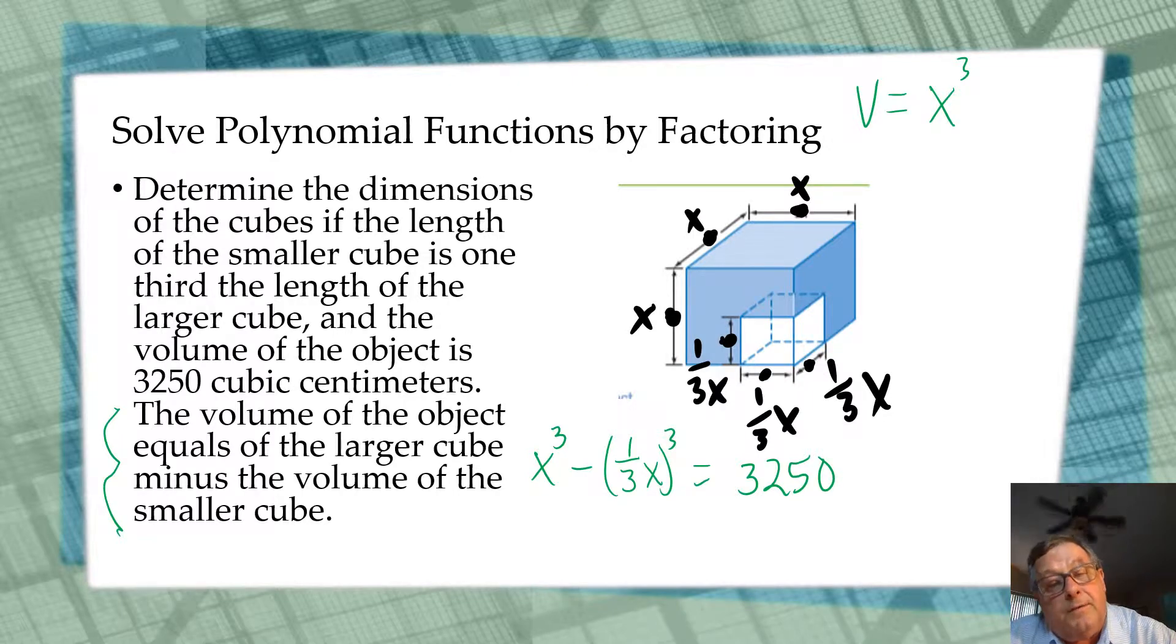It's set up like the difference of a cube, and so we could say x minus one-third x equals x squared plus one-third x plus one-ninth x squared and solve for that. Yeah, you could do all that.